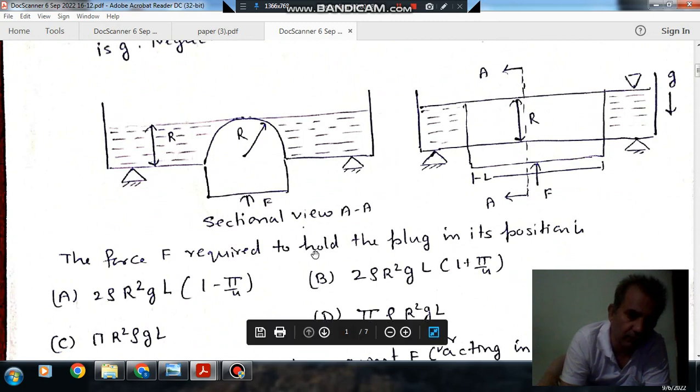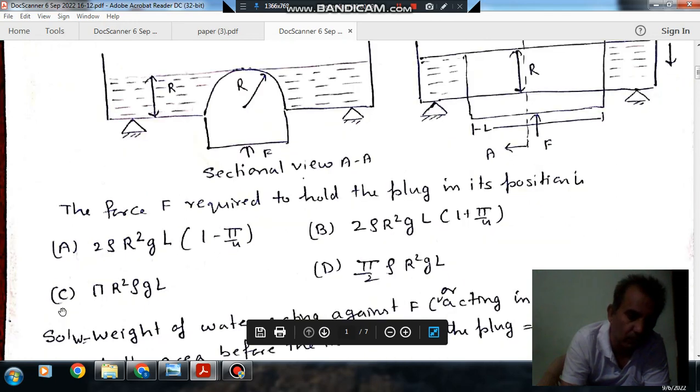The force F required to hold the plug in this position is: option A, 2ρR²GL(1 - π/4); option B, 2ρR²GL(1 + π/4); option C, πR²ρGL; option D, (π/2)ρR²GL.